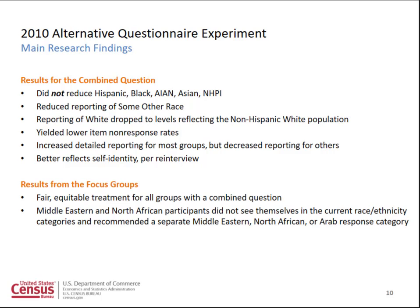Looking at the combined question in the AQE, we saw it did not reduce the proportion of Hispanics, Blacks, American Indian or Alaska Natives, or Asians. We saw a huge reduction in the reporting of 'some other race' in the combined question. We also saw white reporting drop to levels consistent with the non-Hispanic white population. The combined question had lower item non-response, and we saw an increase in detailed race reporting for most groups. We also found that the combined question was a better reflection of self-identity, as determined through a re-interview.